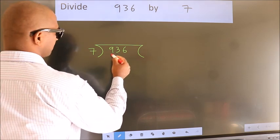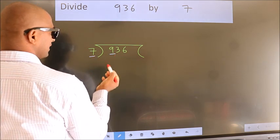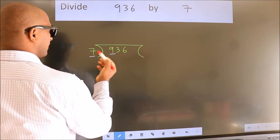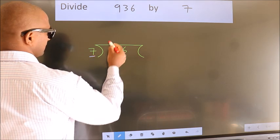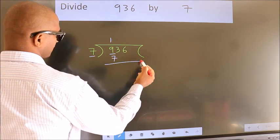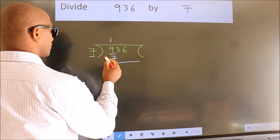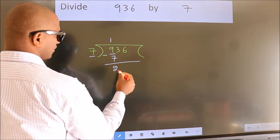Here we have 9, here 7. A number close to 9 in the 7 table is 7 times 1 equals 7. Now we should subtract. We get 2.